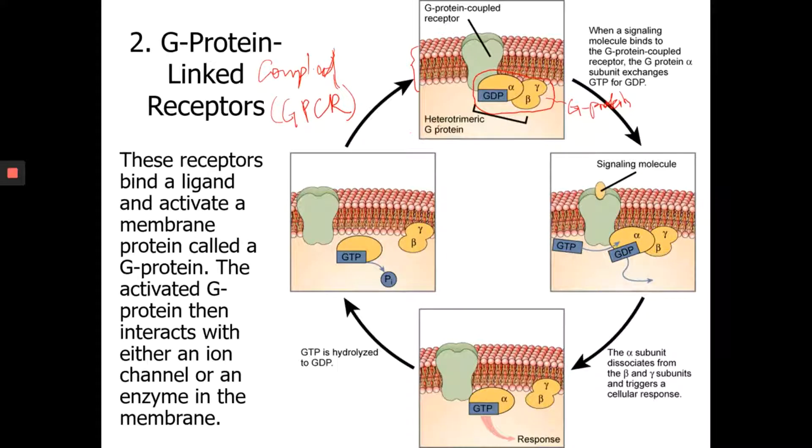Now you see here is this heterotrimeric G-protein. So tri means three. You can see the G-protein has three subunits: alpha, beta, gamma.